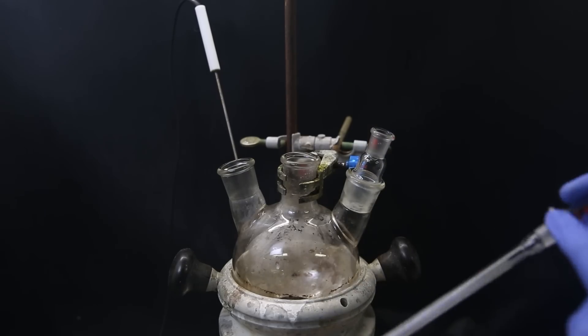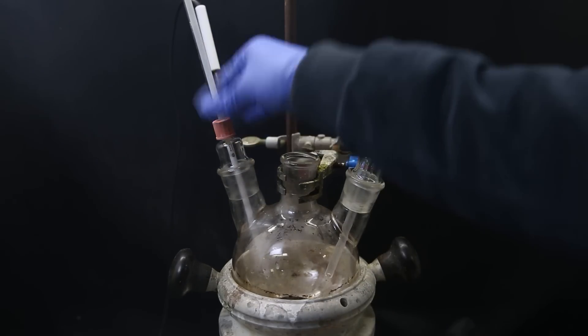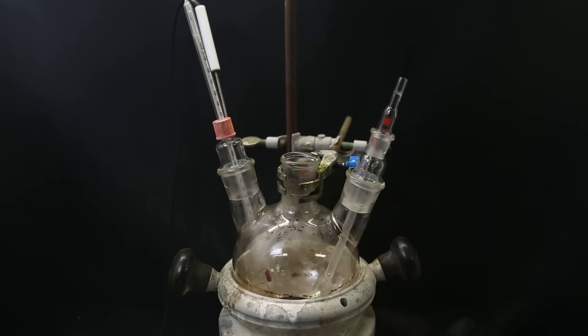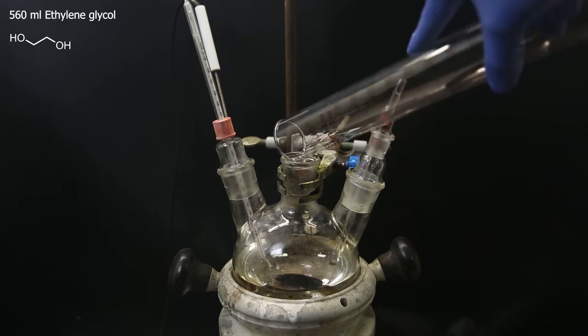On the right, I attach a gas inlet tube that will reach into the liquid. On the left, a thermometer to keep track of the internal temperature. Then as the first reagent, I add in 560ml of ethylene glycol, commonly found as antifreeze, and it is very cheap.